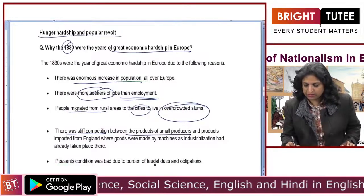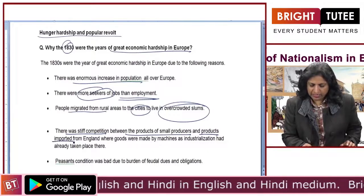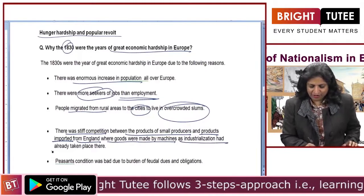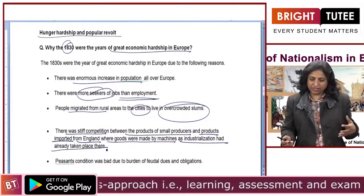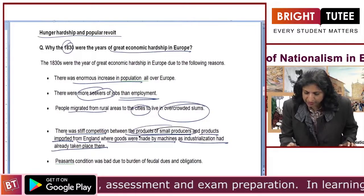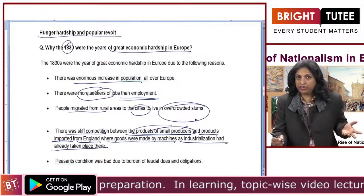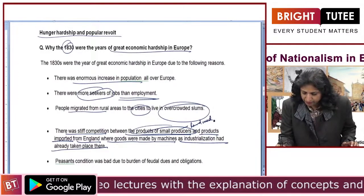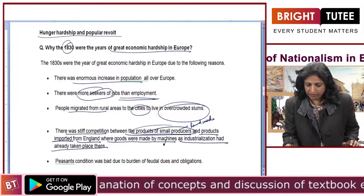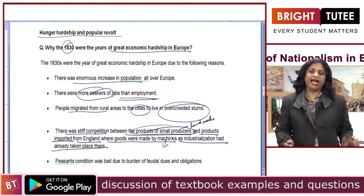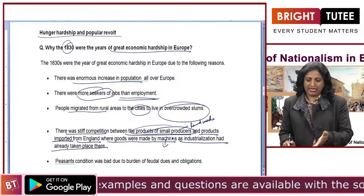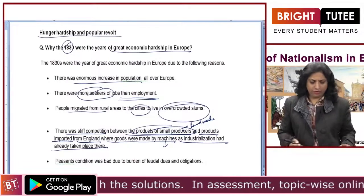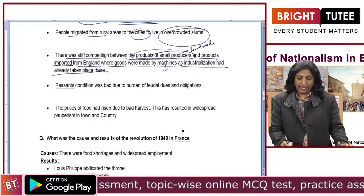There was stiff competition between the products of small producers and imported goods from England, where goods were made by machines as industrialization had already taken place. The products made by small producers were handmade and not of very good quality, whereas English products were machine-made, so the quality was better and the price was comparatively less than the handmade goods produced by small producers.